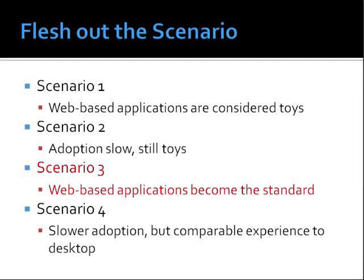In scenario one, web-based applications are considered toys because they're just not as powerful as software from a box. Scenario two: while Flex and Silverlight provide similar or more functionality than software from a box, no killer app shows up, making adoption slower. In scenario three, this is the disruptive technology — Flex and Silverlight applications equal or even exceed desktop applications in features, and the killer app makes this the obvious choice for new software. And in scenario four, even though you get more features from software from a box, the killer app makes Flex or Silverlight applications commonplace for a reduced but good-enough set of features — another disruptive technology waiting to happen.